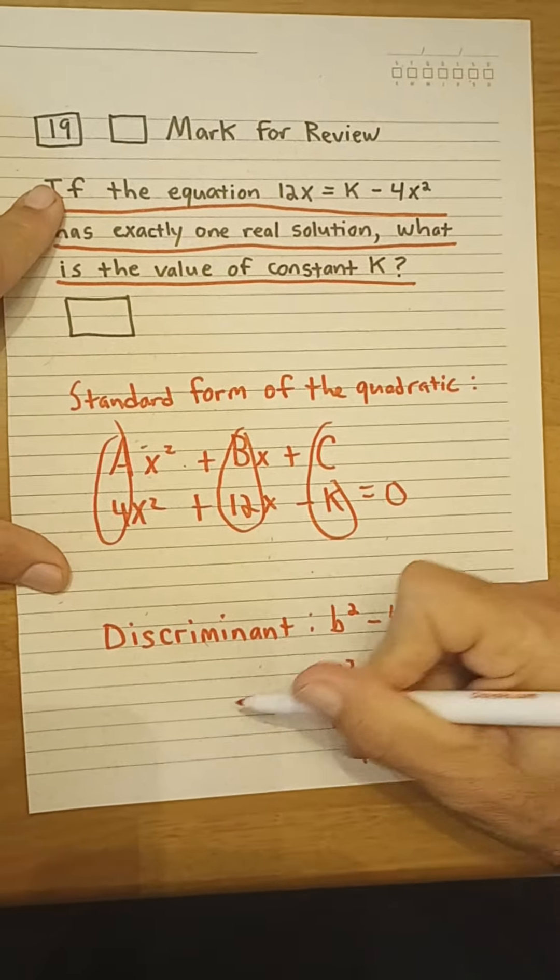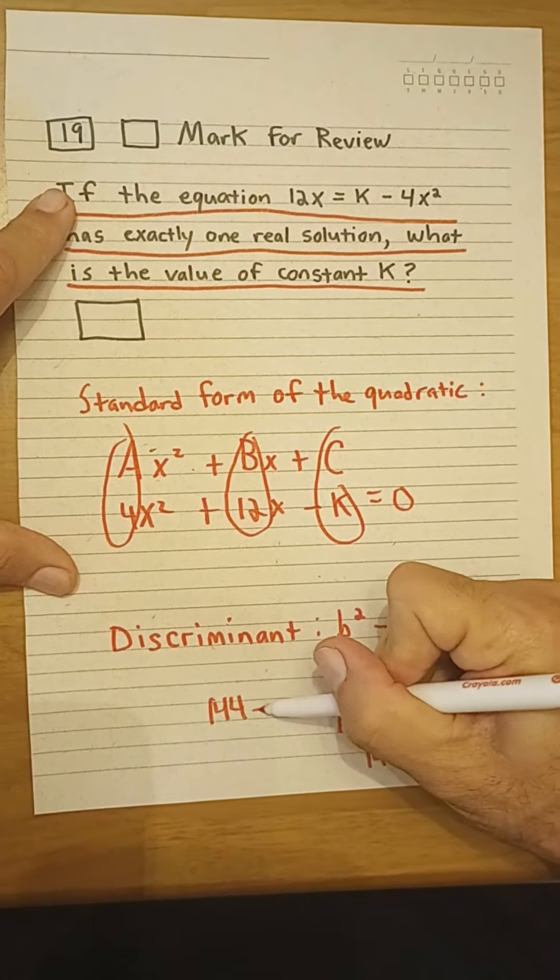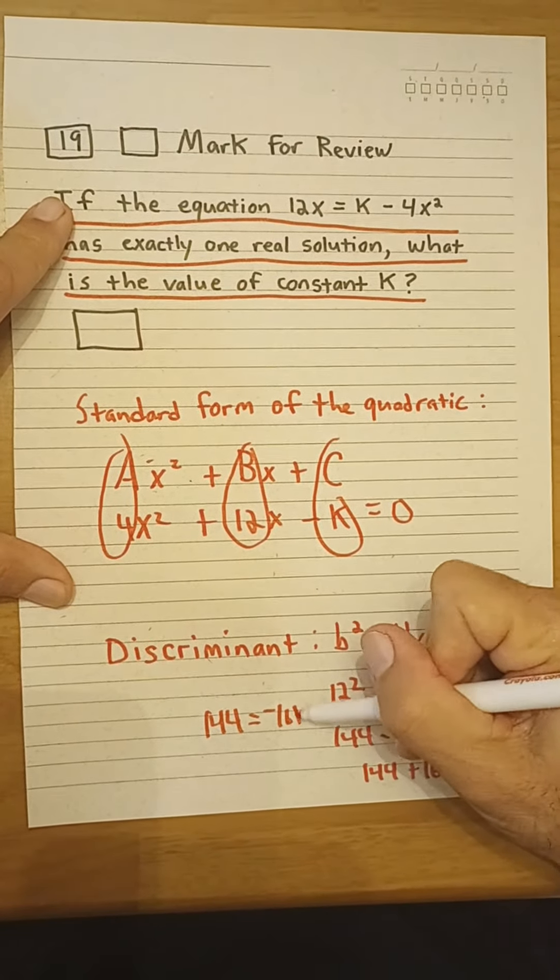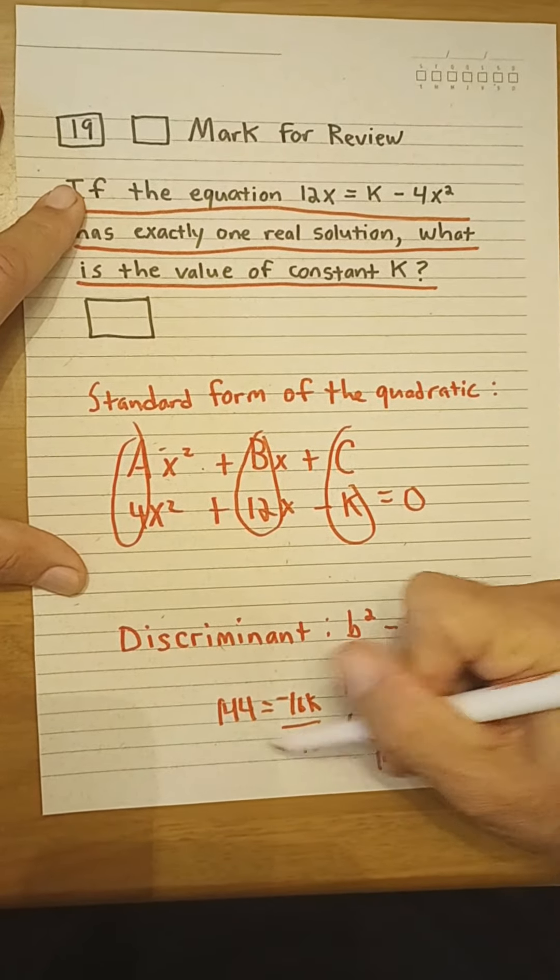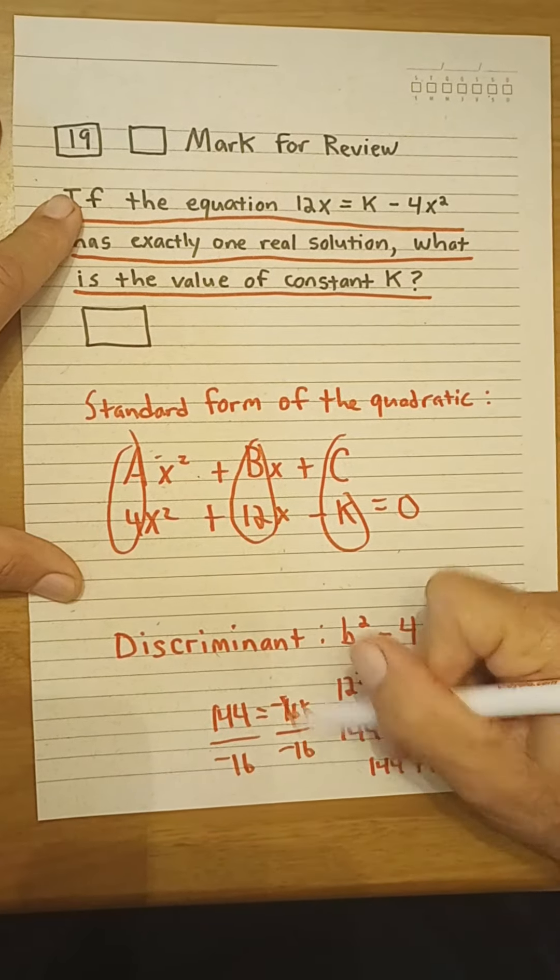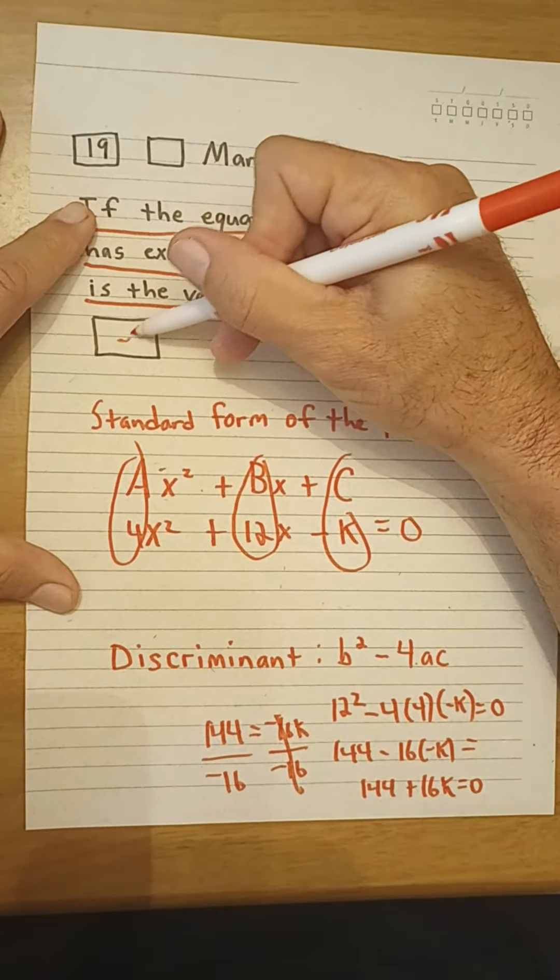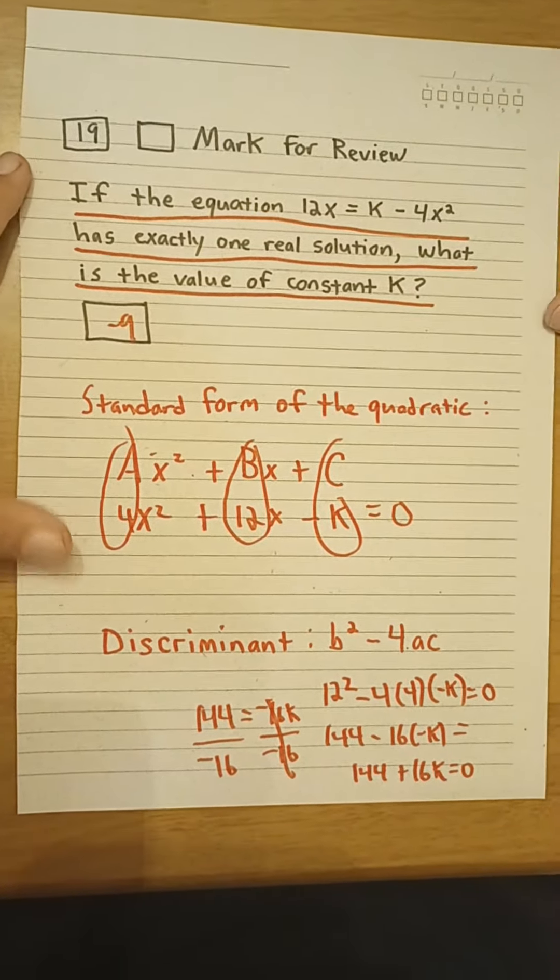Bring that over to the other side. We've got 144 is negative 16k. Divide both sides by negative 16, and our k is going to be negative 9.